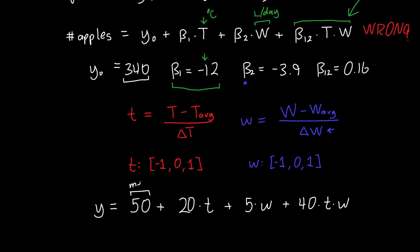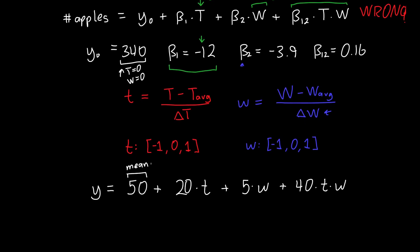Now you might notice that this offset is also different than in my first equation. And this turns out to be the mean of all of my responses. Whereas this value is the theoretical value when the temperature is equal to zero, and the water is equal to zero. And that doesn't really have any meaning. That's not interesting for us. So we don't care about it. But this is meaningful. This is the average response of all of our experiments. This is also very easy to look at. So it tells us that the effect of varying temperature, which is 20, is four times larger than the effect of varying the water.